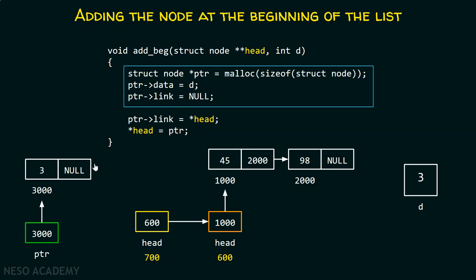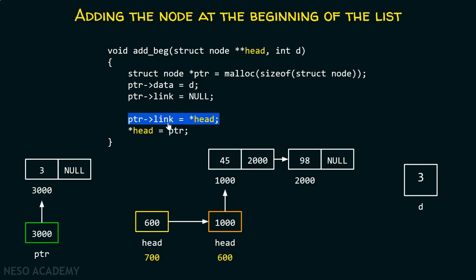We know that this block of code will create a node for us. And then after that, ptr->link equals *head will make the update — that is, it will update the link part of this node. This must be ptr->link equal to *head, instead of ptr->link equal to head. Because here, head contains this address 600. Here we want to store the address 1000, that is the address of the first node of the list. We can do this by dereferencing head. After dereferencing head, we will get inside this pointer — that is, we will get address 1000 — and store that in the link part of this node.